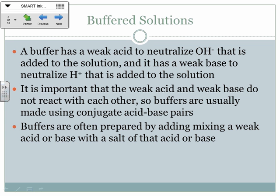Basically what a buffer does: it has a weak acid and a weak base in it. The weak acid is there in case some strong base gets added — it can neutralize a little bit of that strong base. The weak base is there to neutralize any strong acid that gets added. The weak acid and weak base need to not react with each other, because that would make the buffer useless. So we use conjugate acid-base pairs.